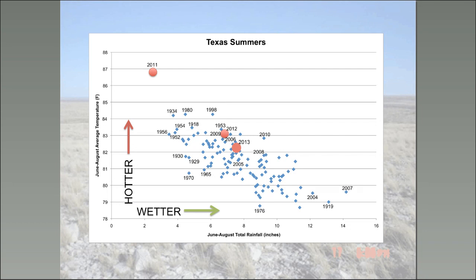This is a plot I made a couple years ago that I've been updating, showing rainfall in summer averaged across Texas against average summertime temperatures. You can see there's a negative slope — the wetter it is, the cooler the summer tends to be. 2011 is that big dot in the upper left, corresponding to extremely hot and dry conditions. 2012 and 2013 were a bit more normal but still on the dry side.